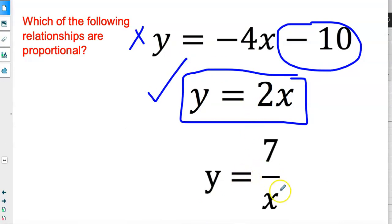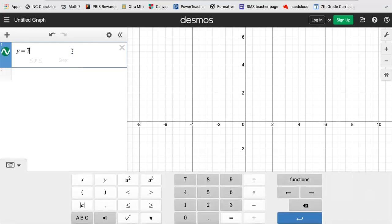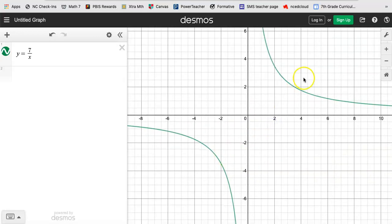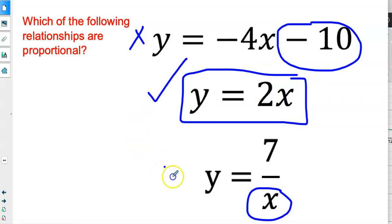Now y = 7/x. Do you remember? Are we allowed to have x in the denominator? Let's go ahead and graph this. y = 7/x. And it is not proportional. Take a look. This is called inverse variation. And it's curved and it doesn't go through (0, 0). So this is not proportional.